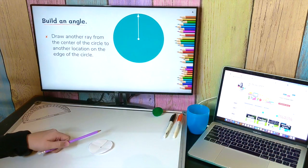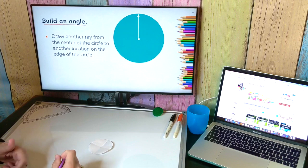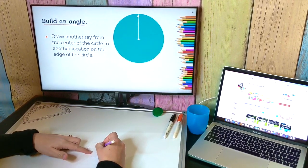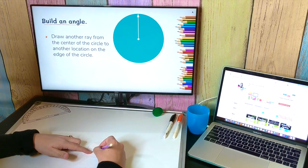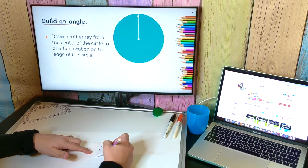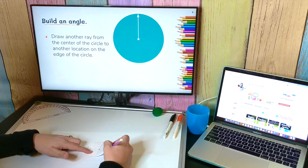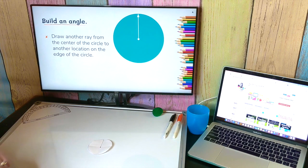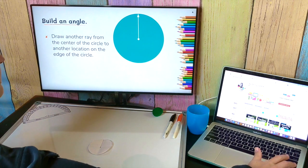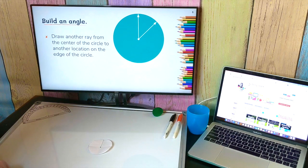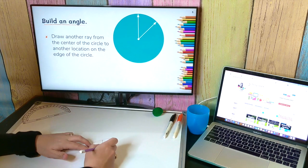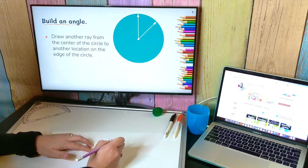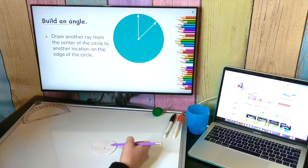I have a digital version here. So now we are going to build what's called an angle. So what I want you to do is, on your paper, on your circle, draw another ray from the center of the circle to another point on the edge. So you're creating a second ray with this middle point. That's the one I created digitally. Yours may look a little different. You may have chosen to make your ray over here, and that's totally fine. All I wanted you to do was create another ray.